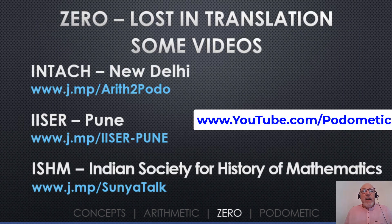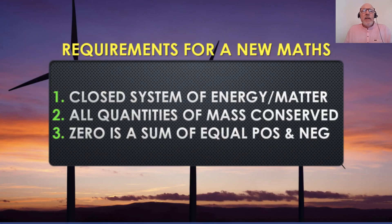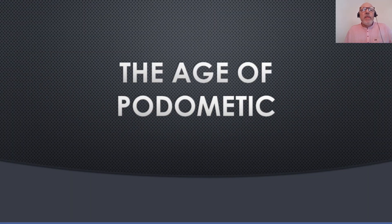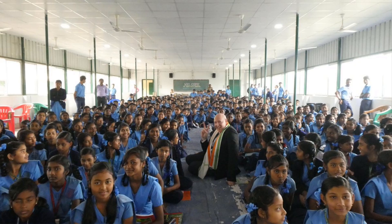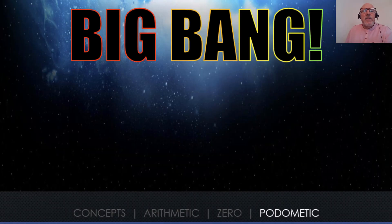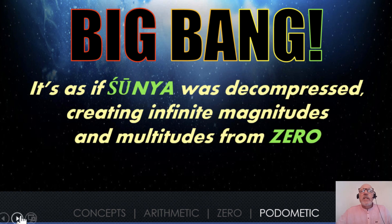I've got many videos freely available on my YouTube channel, which is Podomatic. When I consider what are the requirements for a new mathematics framework, the mathematics must agree with all the laws of physics as well as common sense. I assumed a closed system of energy and matter, all quantities of mass were conserved, and zero was, most importantly, a sum of equal positive and negative. That got me to the age of Podomatic, which after almost 38 years I'm in the process of launching in India as a replacement for Western arithmetic.